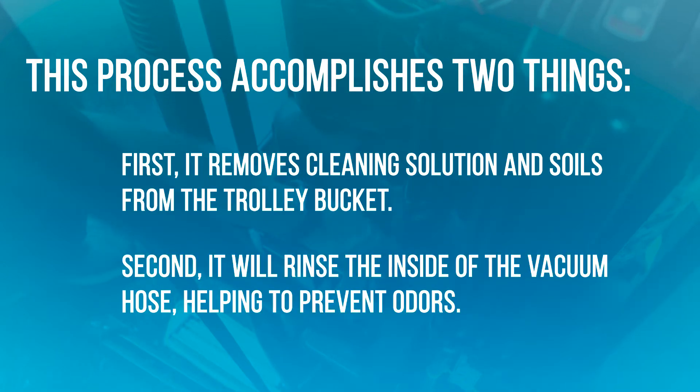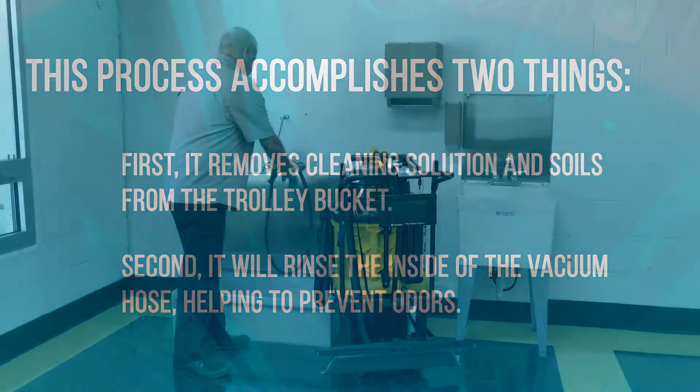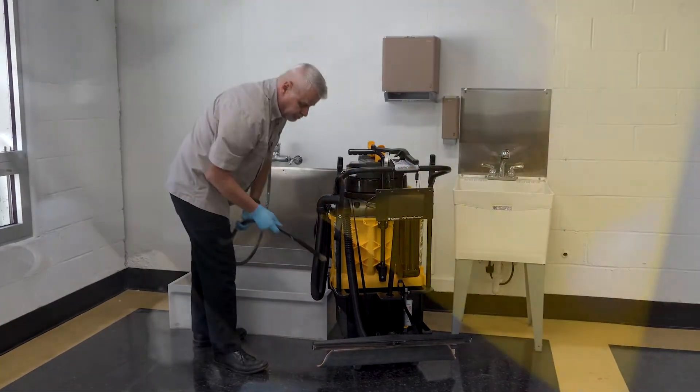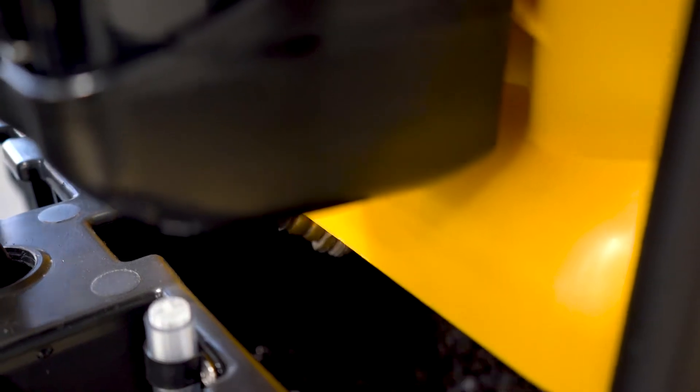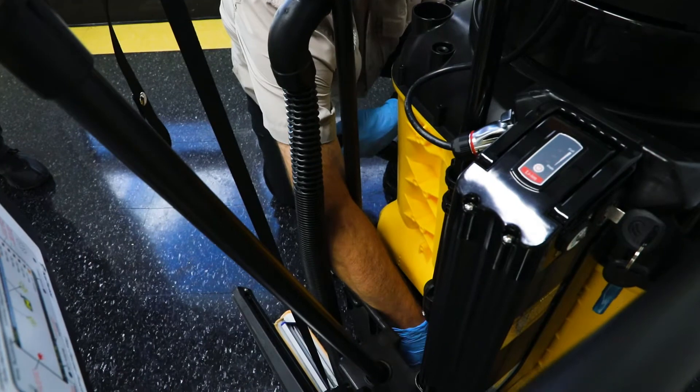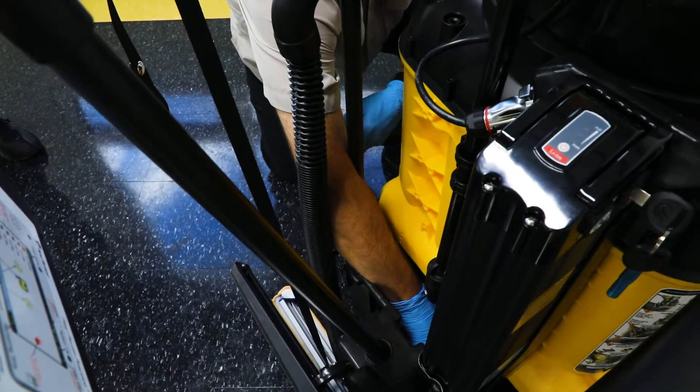Second, it will rinse the inside of the vacuum hose, helping to prevent odors. If necessary, use a hose to rinse the inside of the trolley bucket to loosen sediment that may have settled to the bottom of the bucket. Then continue to vacuum the trolley bucket until it is clean and empty.